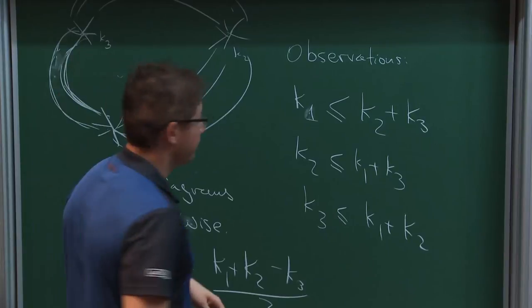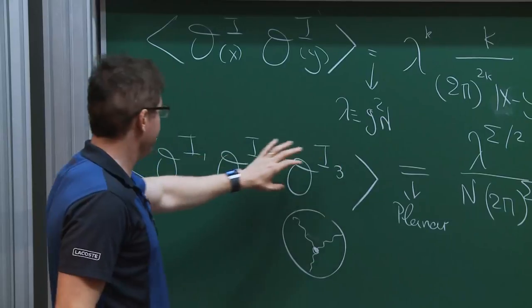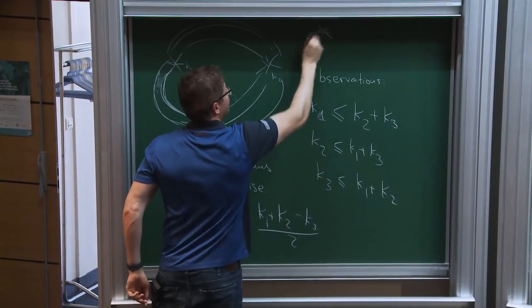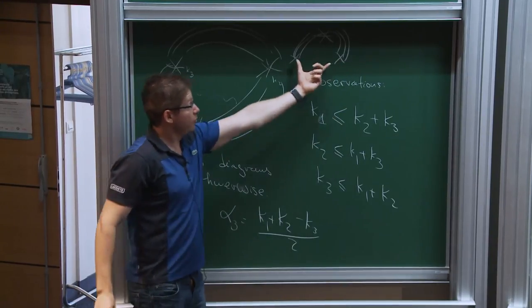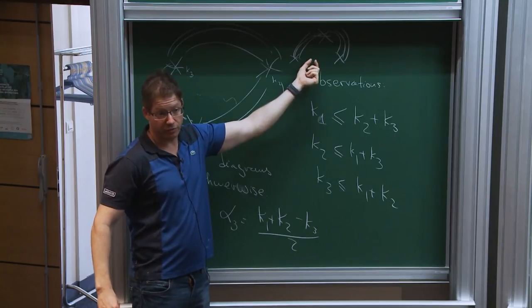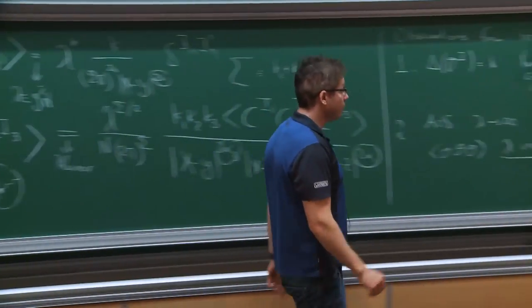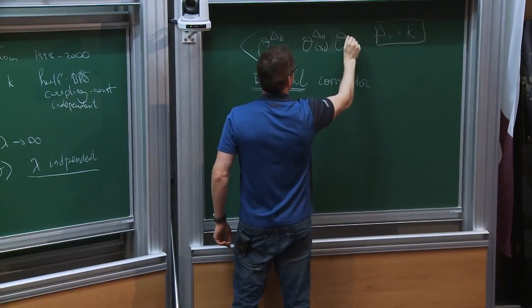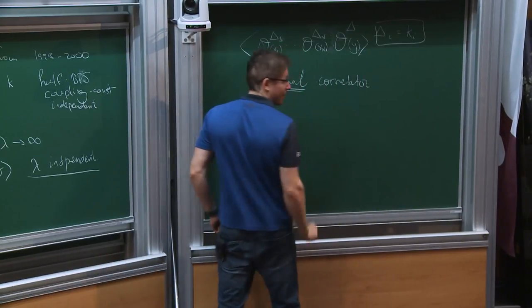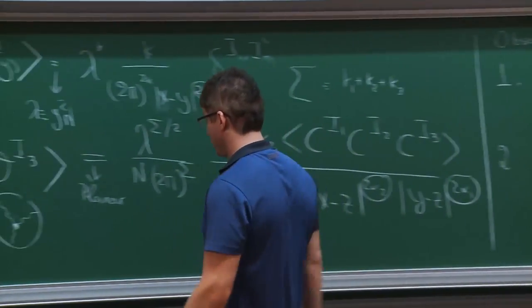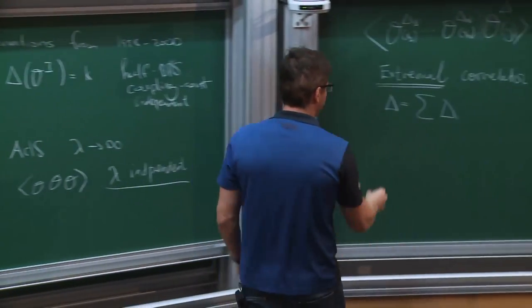An extremal correlator is a special case of this family where one dimension is the sum of all the others: δ = Σδ_i. It's exactly the case where one of those inequalities is saturated. For a three-point function, that means δ3 = δ1 + δ2. The diagrams are then simpler — there are no contractions between the two lighter operators, only contractions going from the heavy 'mother' operator to the 'daughter' operators. That's the definition of extremal, and it carries over to less supersymmetry.